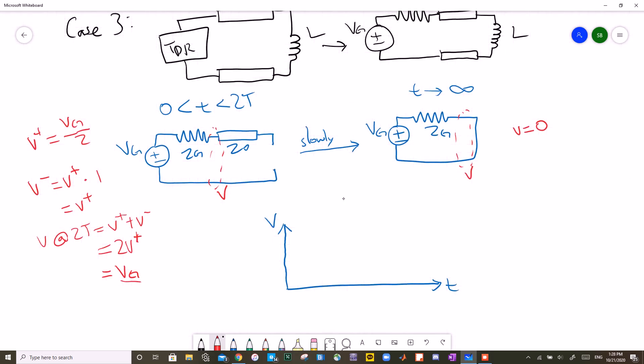So we start off at VG divided by 2, and at 2T it jumps up to VG, then it slowly drops down to 0. And that is my answer for case number 3.